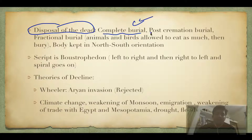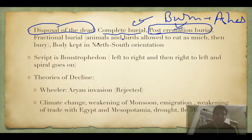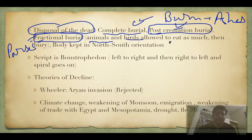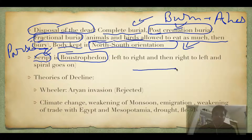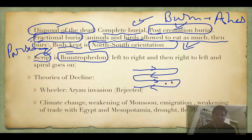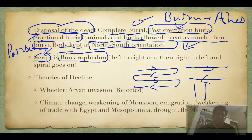For disposal of the dead, there were three methods: complete burial — burying the dead body; post-cremation burial — burning the body and spreading the ashes; and fractional burial, still practiced by Parsis, where animals and birds are allowed to consume the body and the remaining parts are buried. The body was kept in a north-south orientation. The script was Boustrophedon — meaning it alternated direction: left to right, then right to left, in a spiral manner.